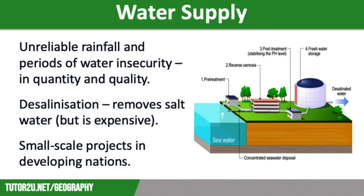The second way that people are having to adapt is to cope with issues around water supply. Drought and flood events have already become more frequent and more severe due to climate change, leading to unreliable rainfall and periods of water insecurity both in terms of water quantity and quality. This will affect people living in rural areas of developing nations more than anyone else.